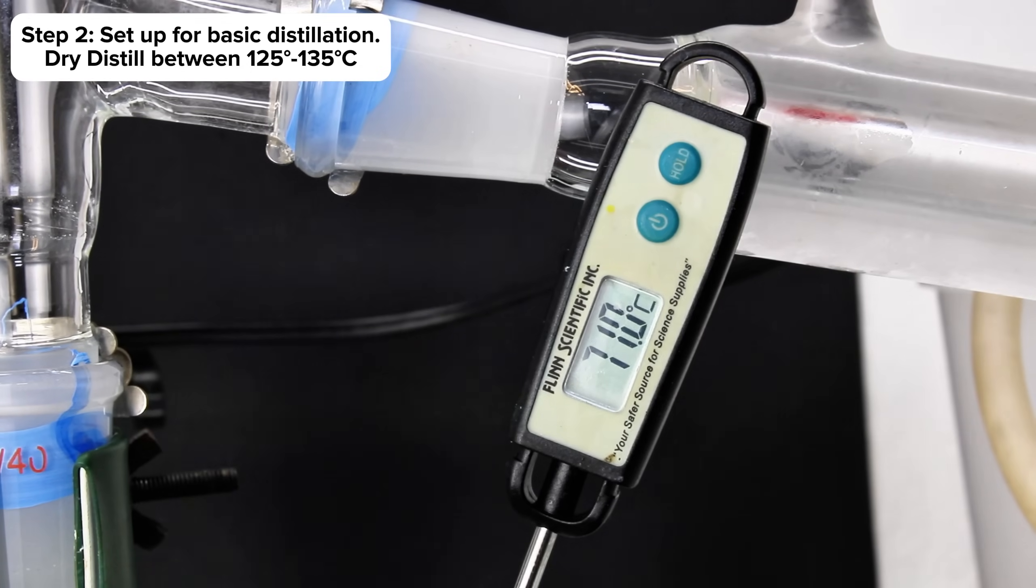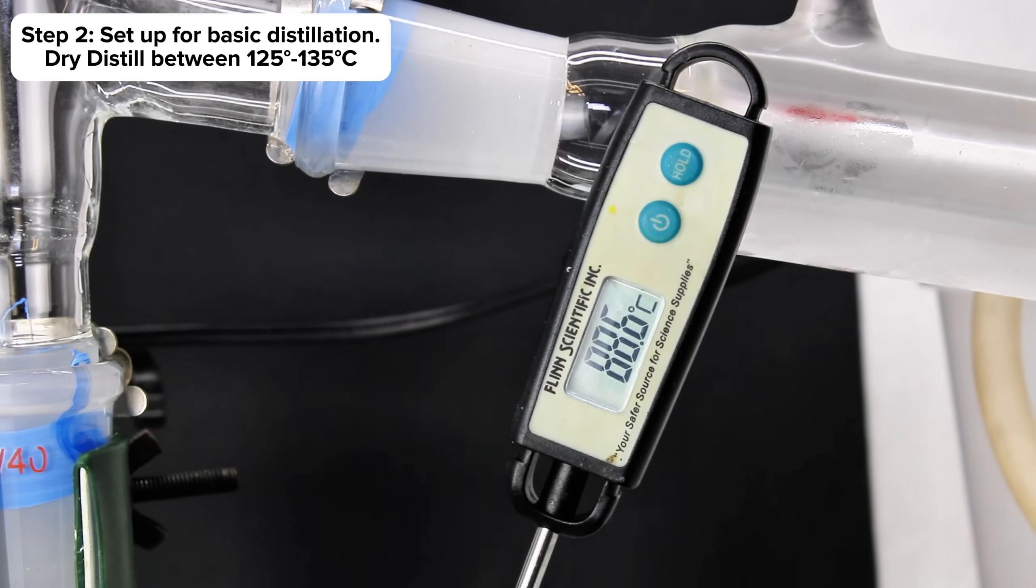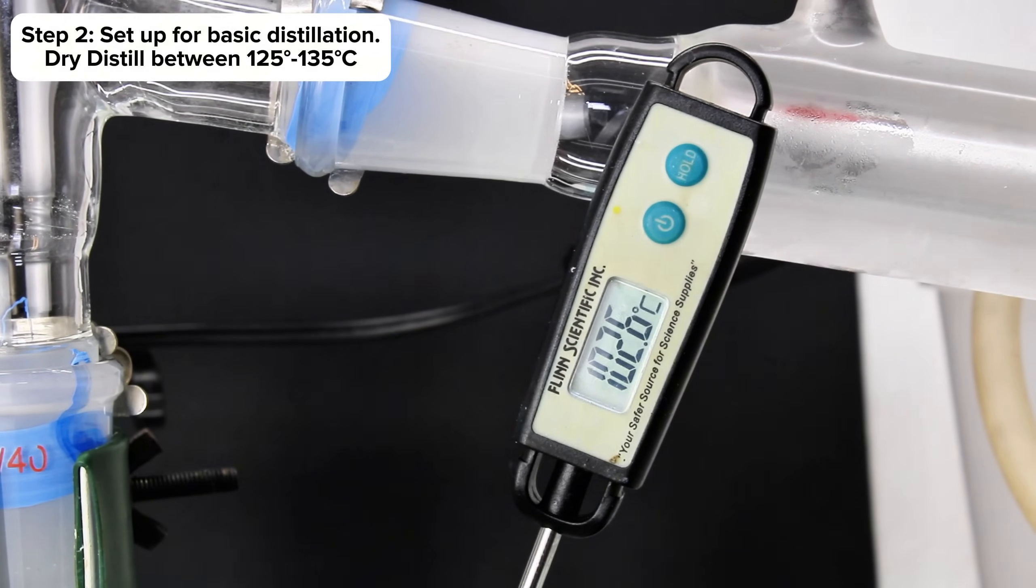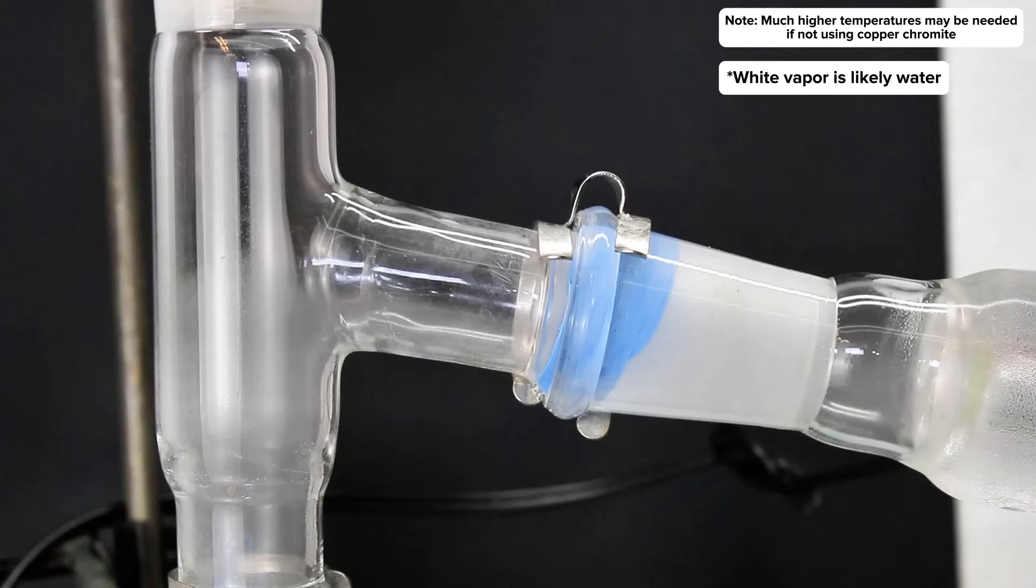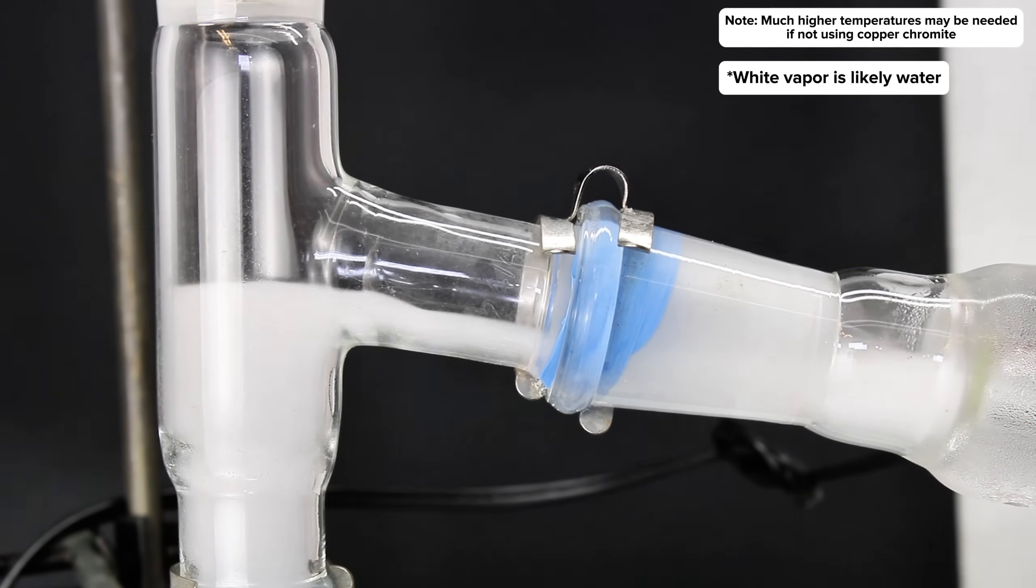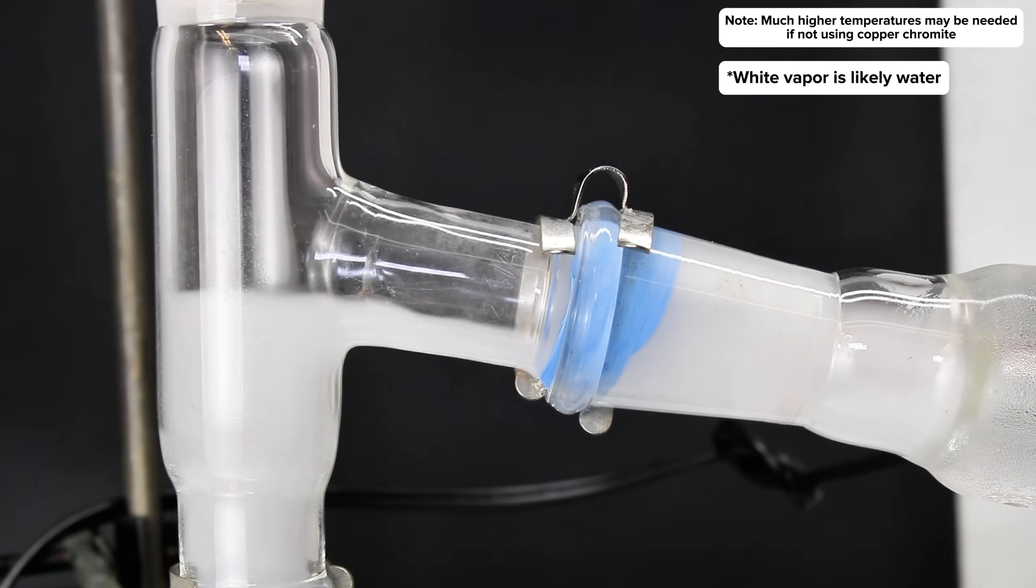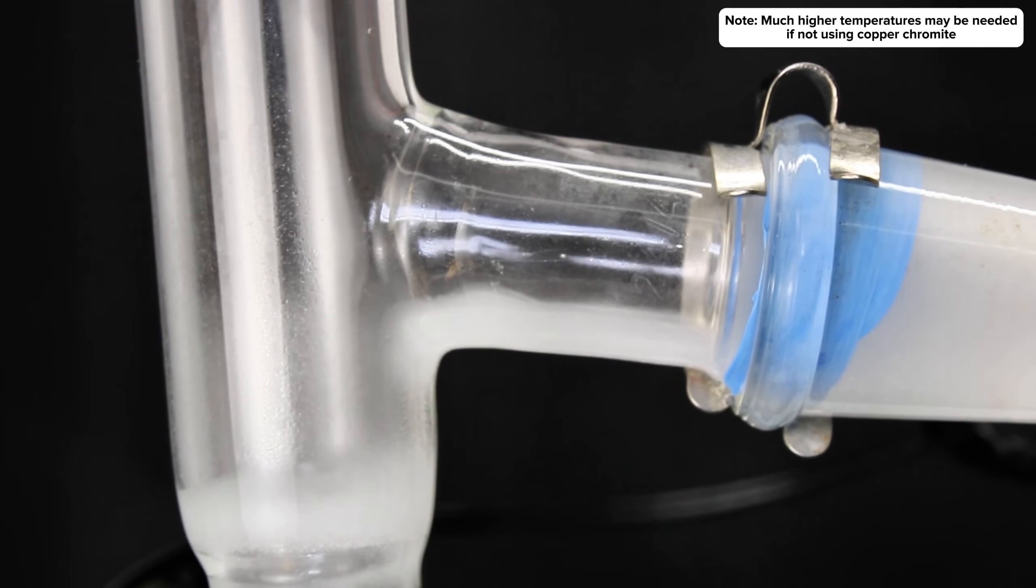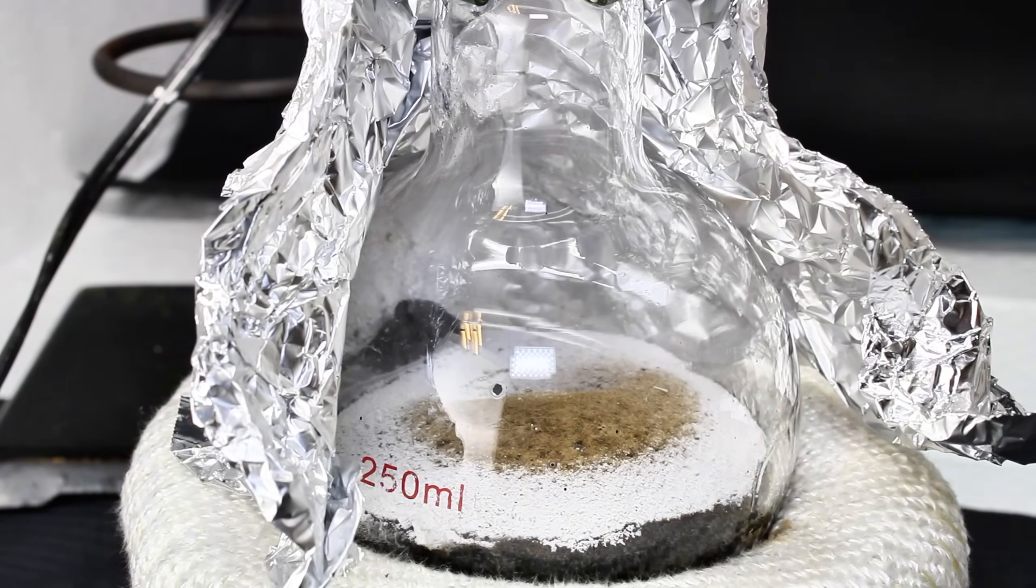At this point, I slowly ramped up the heat to around 115 degrees Celsius, at which point white vapors that I assume were mostly water began to come through the column. I continued heating to 130 degrees Celsius, at which point the niacin began to visibly melt and decarboxylate.